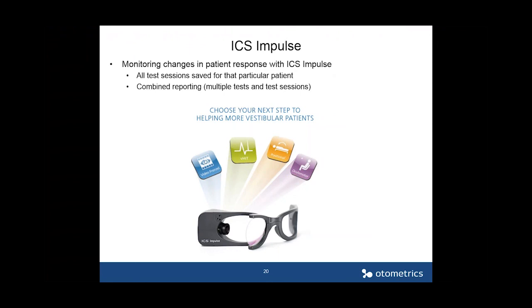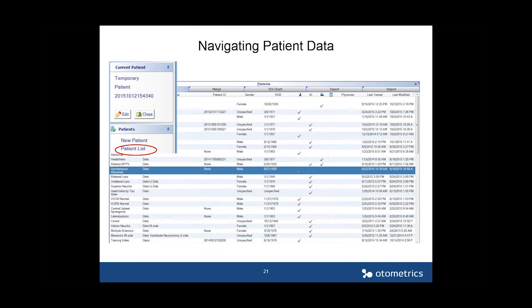The ICS Impulse can be used to monitor changes in patient response over time. All test sessions are saved for that particular patient, so if they come in acutely or still have symptoms, you have those test results and can continue monitoring them. All test sessions are saved under that patient so you can review them afterwards. You can also provide combined reporting with multiple test sessions and multiple tests in one report. When returning to a patient, you go to the patient list and select that patient to ensure all their data is stored together.